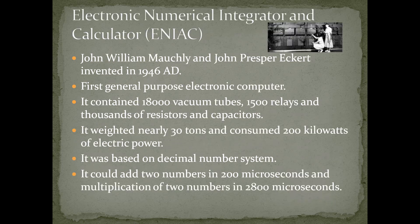ENIAC — Electronic Numerical Integrator and Calculator — was invented by John William Mauchly and John Presper Eckert in 1946 A.D. It was the first general-purpose electronic computer. It contained 18,000 vacuum tubes, 1,500 relays, and thousands of resistors and capacitors. It weighed nearly 30 tons and consumed 200 kilowatts of electric power. It was based on the decimal number system and could add two numbers in 200 microseconds and multiply two numbers in 2,800 microseconds.